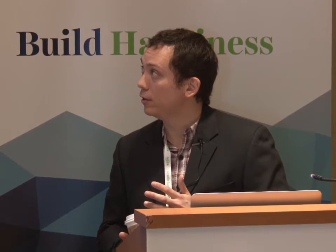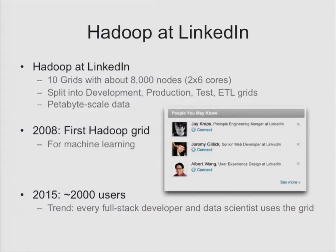At LinkedIn, Hadoop currently consists of about 10 different grids with just under 10,000 nodes — multi-core machines — so we have quite a bit of compute power. Our clusters are basically busy 24/7. Some grids are ad hoc grids where users can run experiments on an ad hoc basis. Some are production grids, meaning all jobs have SLAs and are scheduled to run at regular intervals. LinkedIn has data on the petabyte scale — something in the order of 50 petabytes, depending on how you count replicated data.